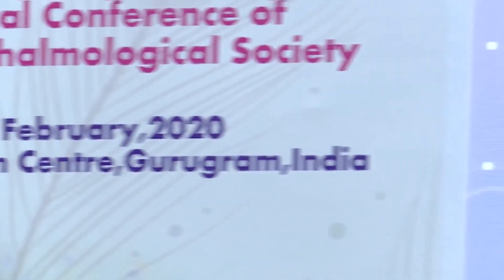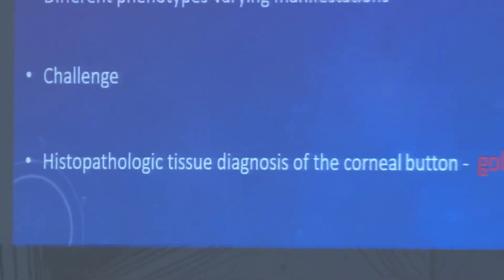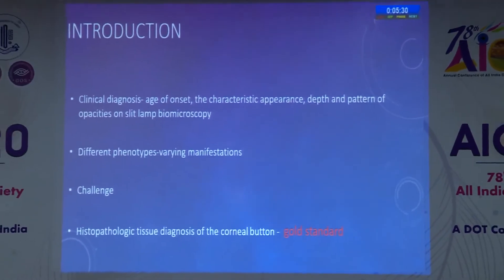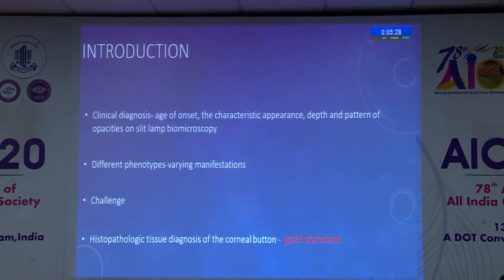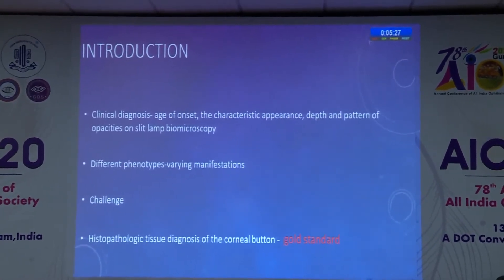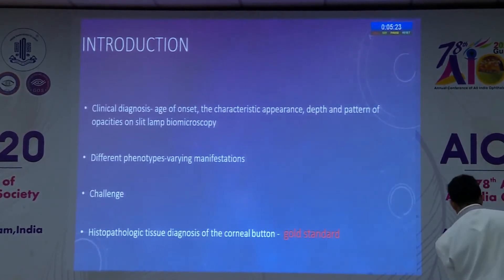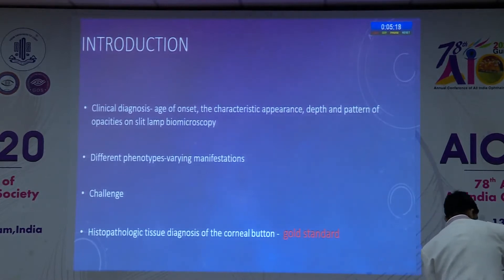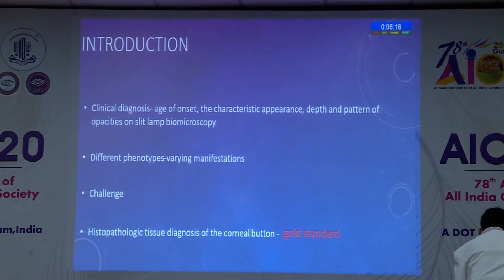In the diagnosis of corneal dystrophy, the clinical diagnosis can be established based on the age of onset, the characteristic appearance, depth and pattern of opacities on slit-lamp biomicroscopy. Different phenotypes of the same corneal dystrophy may have varying manifestations, and certain corneal inflammatory conditions and scars may show secondary degenerative changes which look like corneal dystrophies. Therefore, the diagnosis of corneal dystrophy becomes challenging.